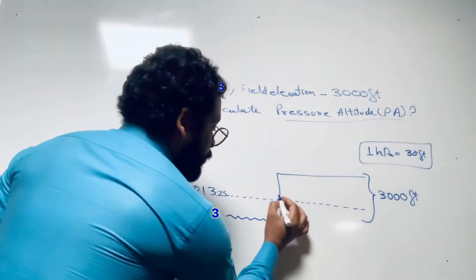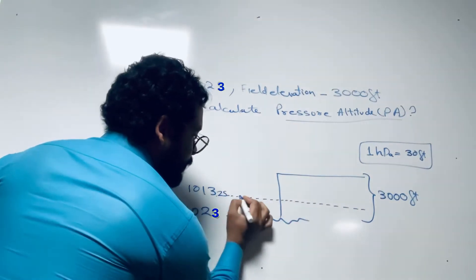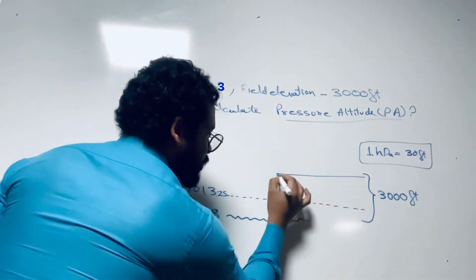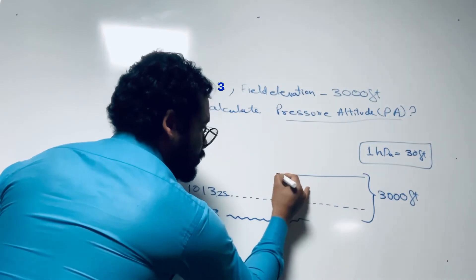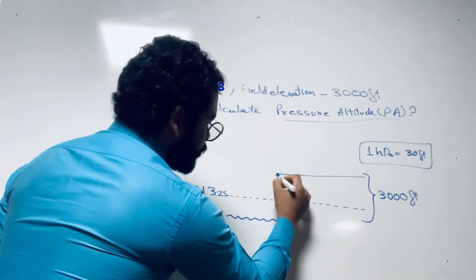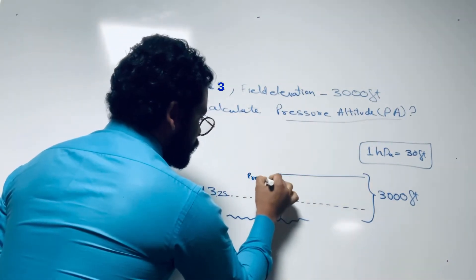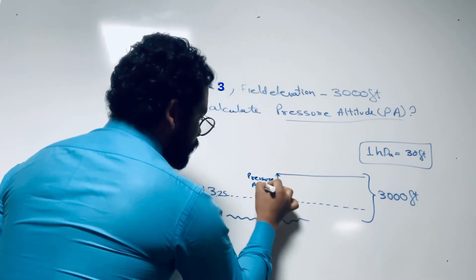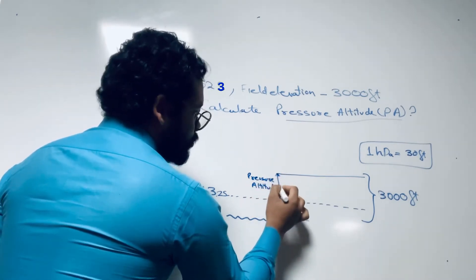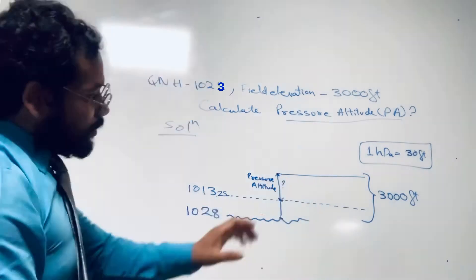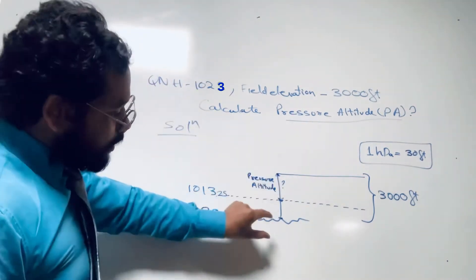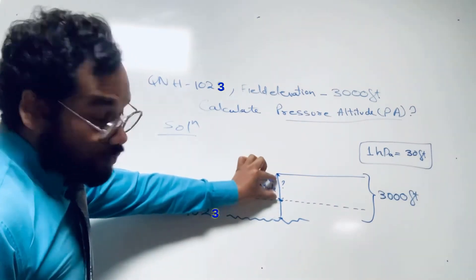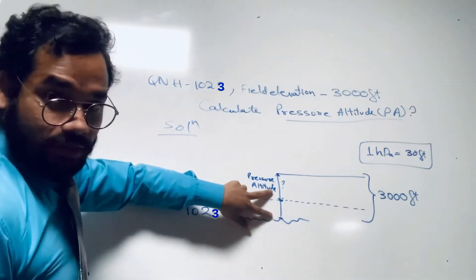Now, from this standard pressure level up to the field elevation, that distance is the pressure altitude. We need to calculate this. We know the field elevation is 3000 feet from sea level. If we find the gap between sea level and the standard pressure level, we can easily calculate the pressure altitude.